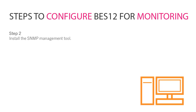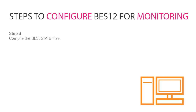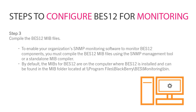Step 2: Install the SNMP management tool. The computer that hosts the SNMP management tool, or a standalone SNMP trap management tool, must be able to access and receive data from any computer where BES-12 is installed. Step 3: Compile the BES-12 MIB files. To enable your organization's SNMP monitoring software to monitor BES-12 components, you must compile the BES-12 MIB files using the SNMP management tool or a standalone MIB compiler.